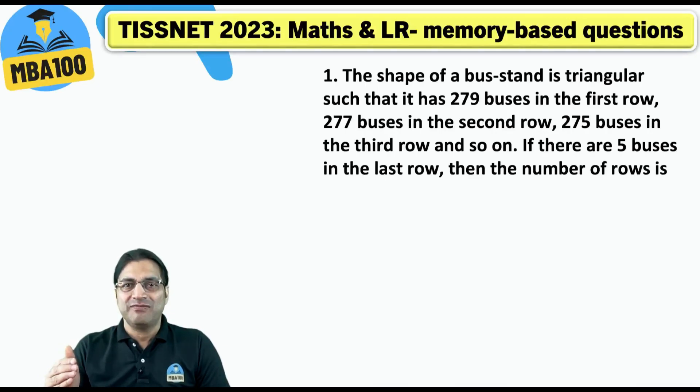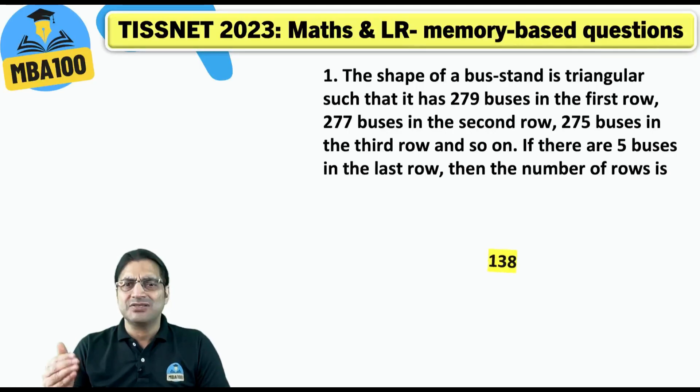The shape of a bus stand is triangular such that it has 279 buses in the first row. The answer to this question was 138.